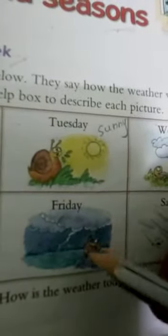Next is Friday. How was the weather on Friday? Look at this picture — it is raining and also thundering. The clouds are there. Bijlian kadak rahi hai, baarish ho rahi hai, baadal bhi hain — iska matlab tufan aya. So tufan ko English mein stormy kehte hain. The weather was stormy — S-T-O-R-M-Y.